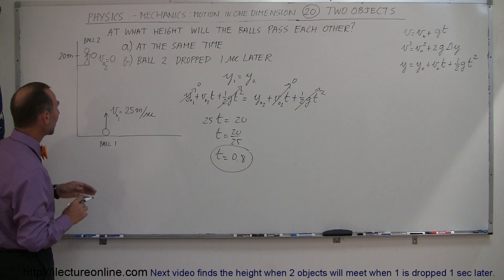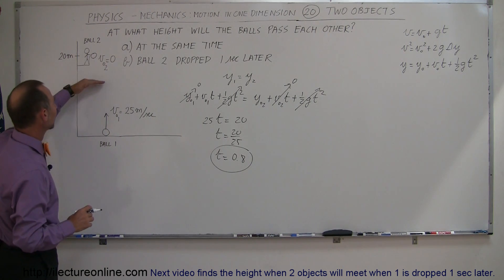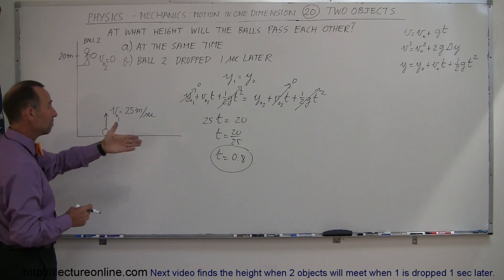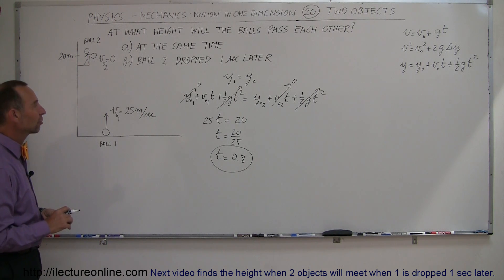Now, does that make sense? It probably does, because the average velocity for the first ball is about 20 meters per second, and the second ball is being dropped, so yes, in less than one second, they should meet. So, rough word of estimation, that seems like a good answer.